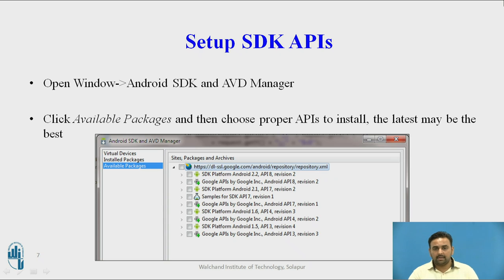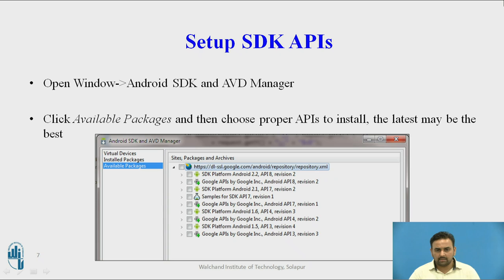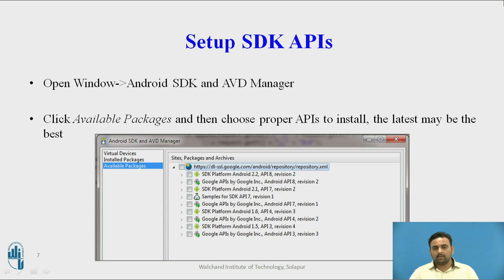Next, we need to set up the API level. There are numerous API levels available, so according to our requirement we have to set up the appropriate SDK API level. Generally API 18 is the minimum required. For that, go to the Window menu, then Android SDK, and use the AVD Manager where you can create a virtual device. When choosing the virtual device configuration, it will ask for the API level and you select the appropriate one, then install the SDK.